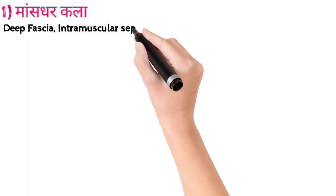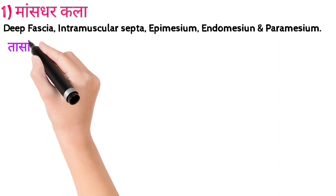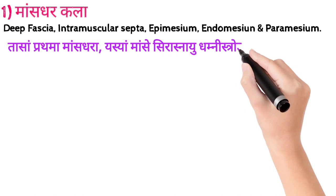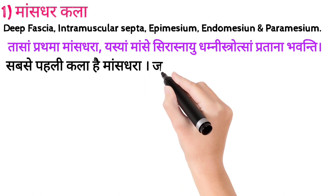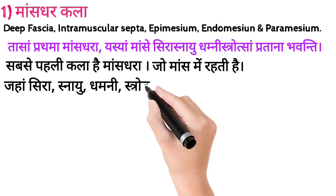Our first Kala is Mash Dharakala, which is intermuscular septa — a modification of deep fascia. Its shloka is: 'Tasaam Pratma Mash Dharakala, yasyam Maase Sira Sanayu Dhamni' — the first Mash Dharakala is found where the Sira, Snayu, Dhamni and Srotas have overlapping presence within the mass.